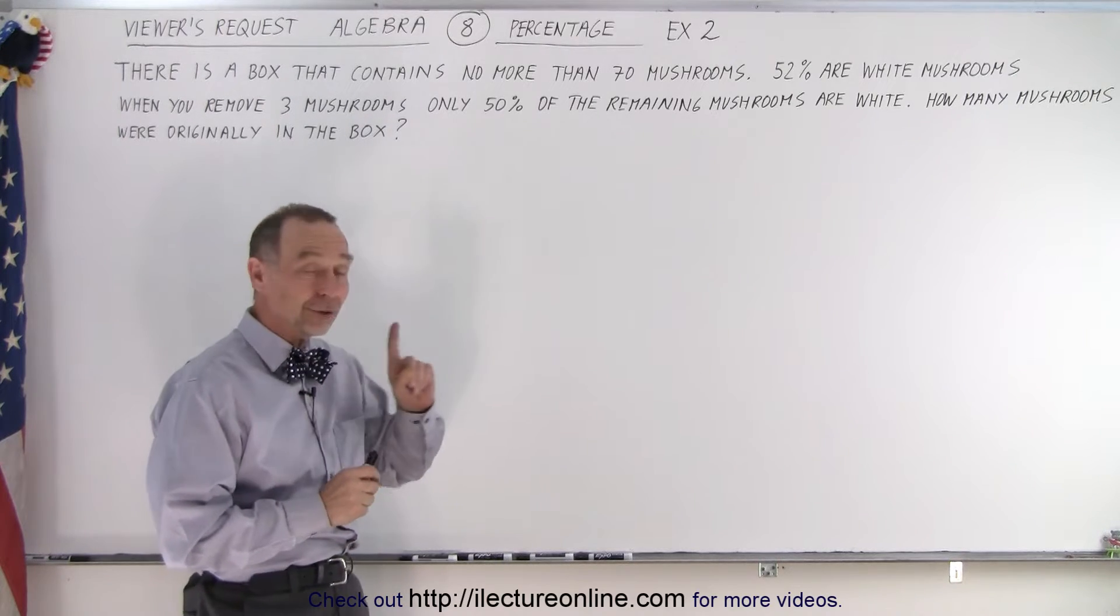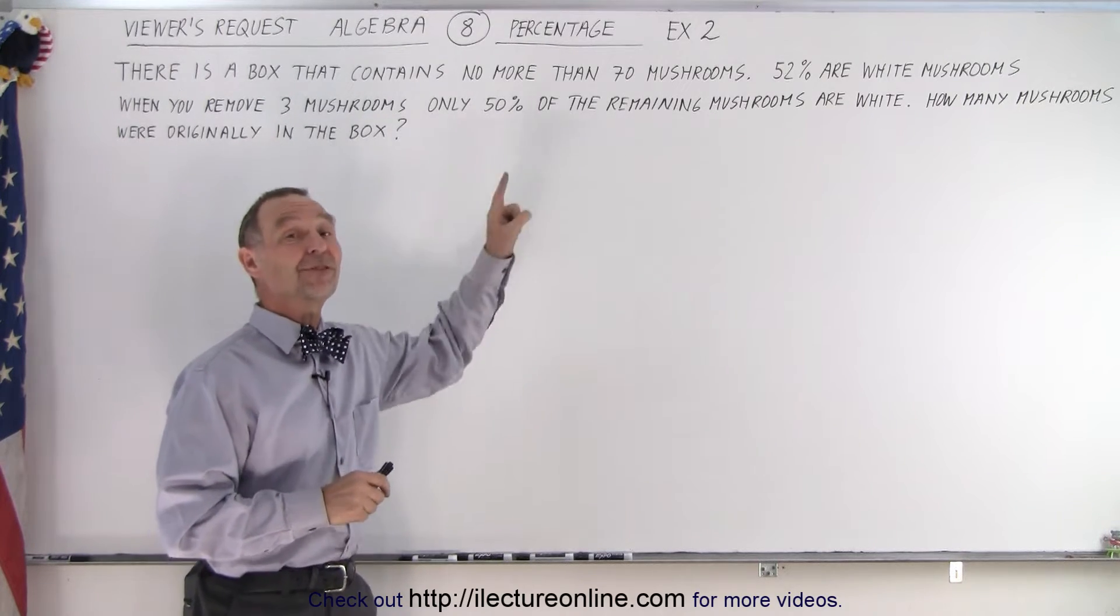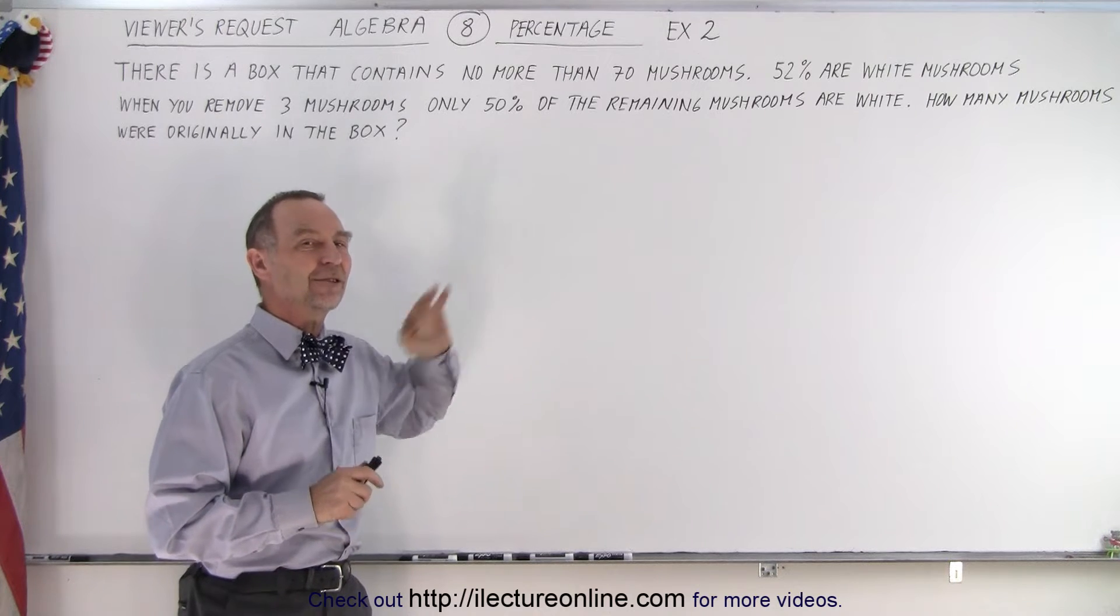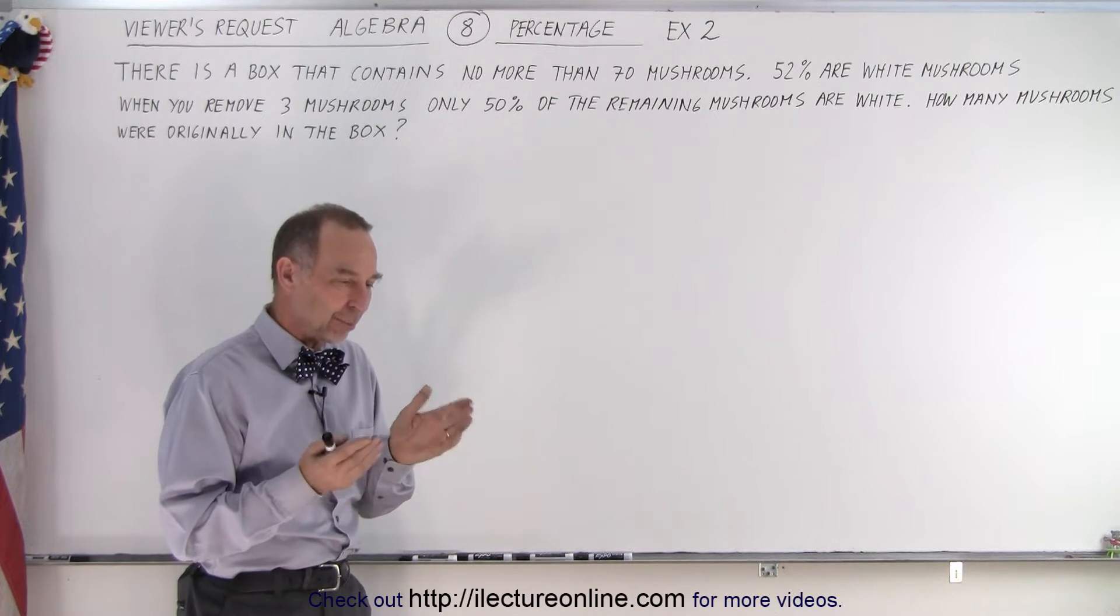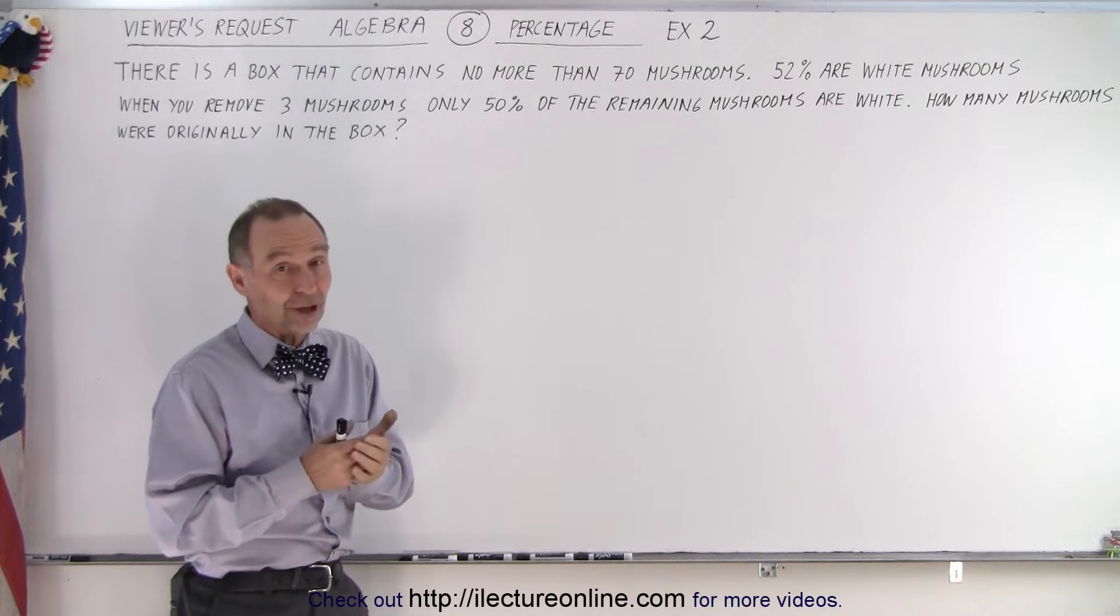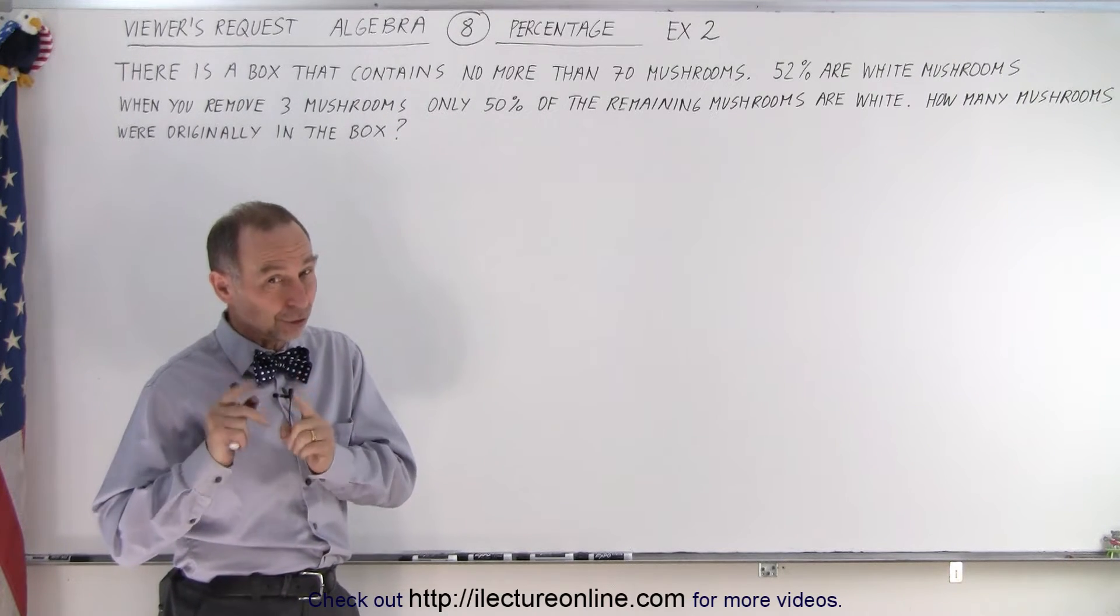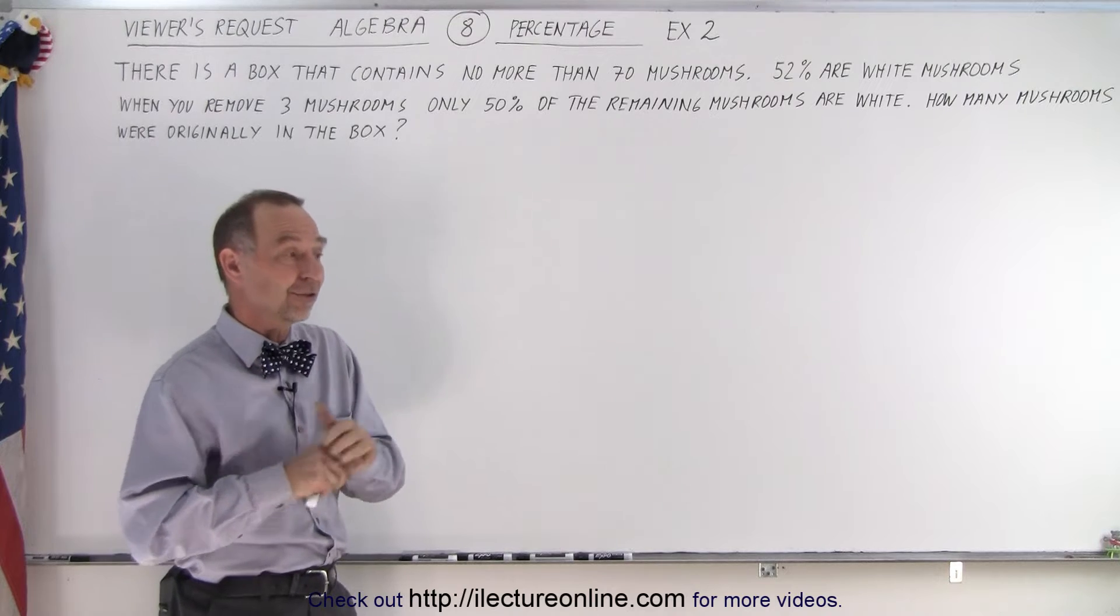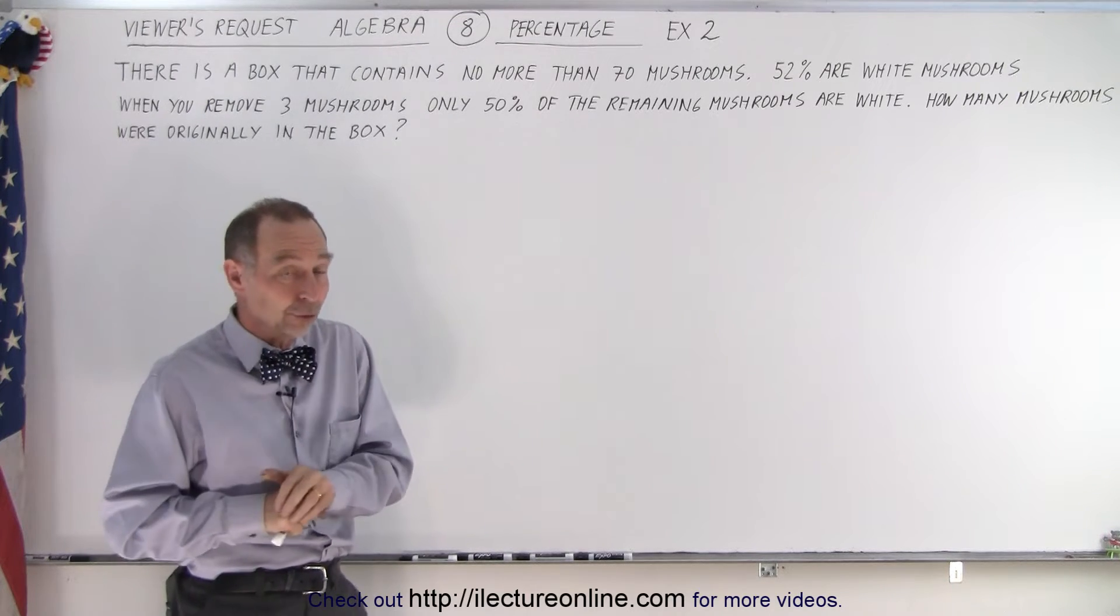And then as I was trying to figure out how to do this problem I realized that the previous problem I could have done slightly differently, because there we had to multiply 12% times the number to get a whole number and it turns out that I came up with the number 50, but you could also use the number 25 because 12% of 25 is also a whole number.